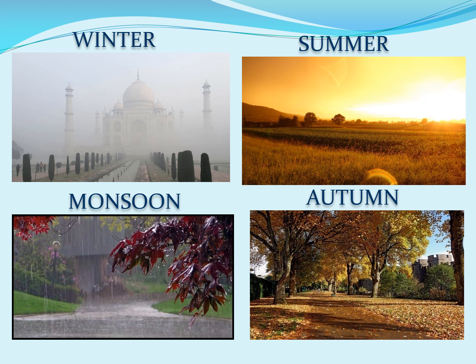Seasons are spans of months of particular weather conditions, caused as a result of the Earth's revolution and rotation on its axis inclined to the plane of revolution. Seasons determine the duration of day and night, temperatures, and precipitation. These affect the climate of a place, and human beings have to accommodate their living conditions to survive the changes that occur due to seasons. For example, human beings change their food habits, clothing, and occupation according to the changes in season.